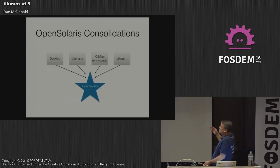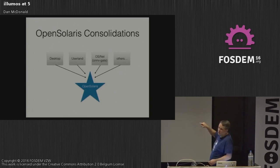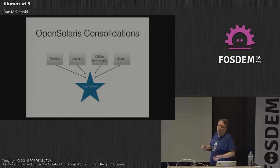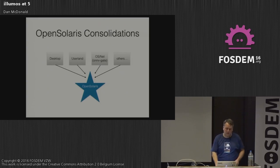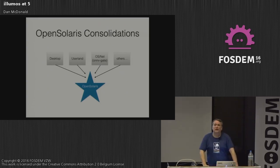So you would have the desktop consolidation, user land consolidation, OS/Net — called ONNVgate, related to the code name for what was to become Solaris 11 — and other consolidations.